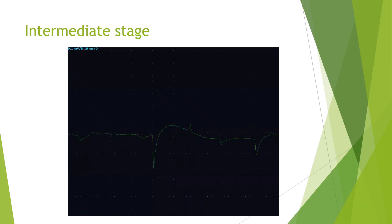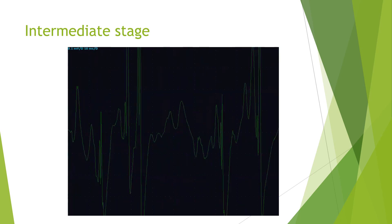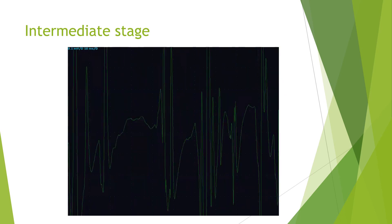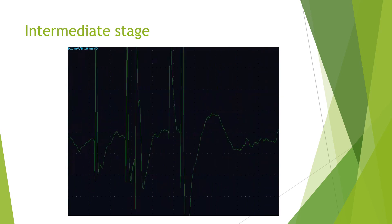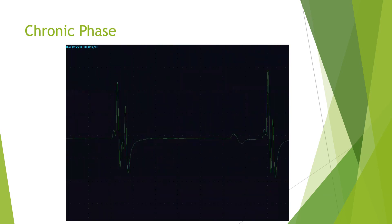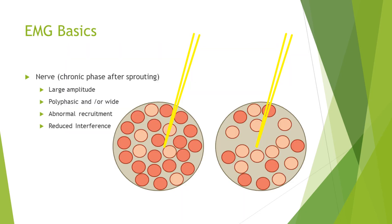I'm now going to show a more intermediate stage of reinnervation. We can still see the positive sharp waves and fibrillations, but the motor units now have far more stable morphology — they're still polyphasic, wide, and large, but not as unstable as they were in the initial stages of reinnervation. By the time we get to the chronic stage, we've got very large units appearing relatively early with the interference pattern remaining reduced. In summary, a nerve in the chronic phase after sprouting has occurred will be large amplitude, polyphasic and wide; the recruitment will be abnormal with large units recruiting earlier, and the interference pattern will be reduced.